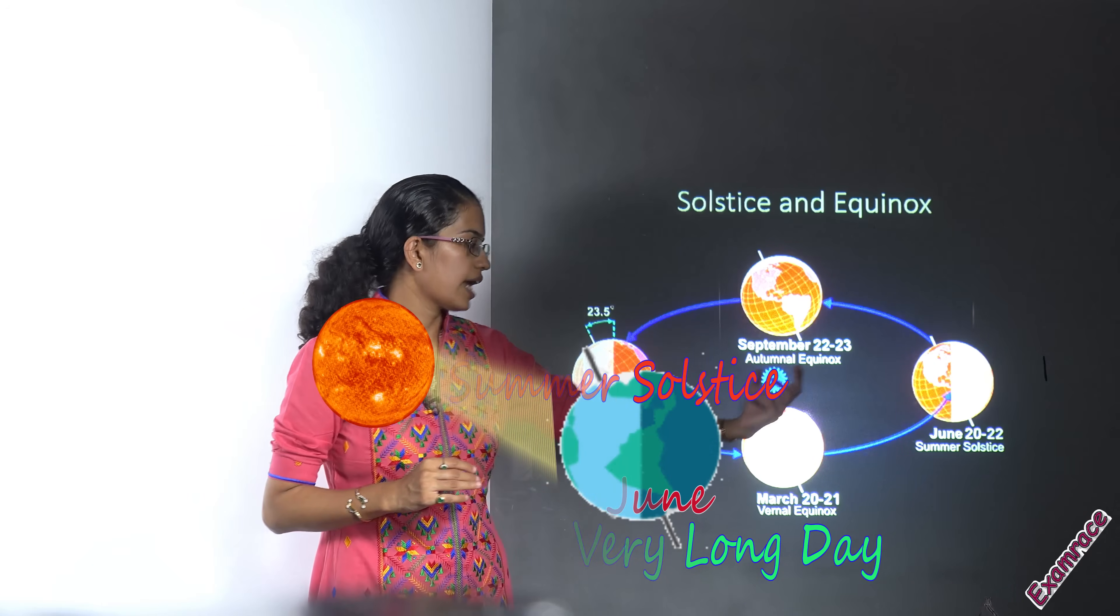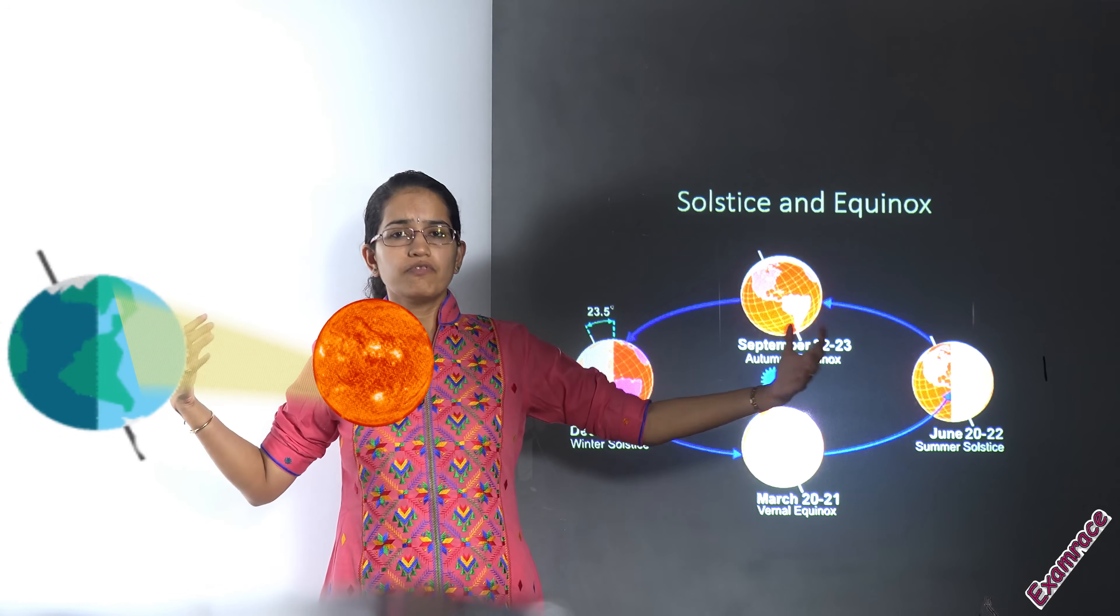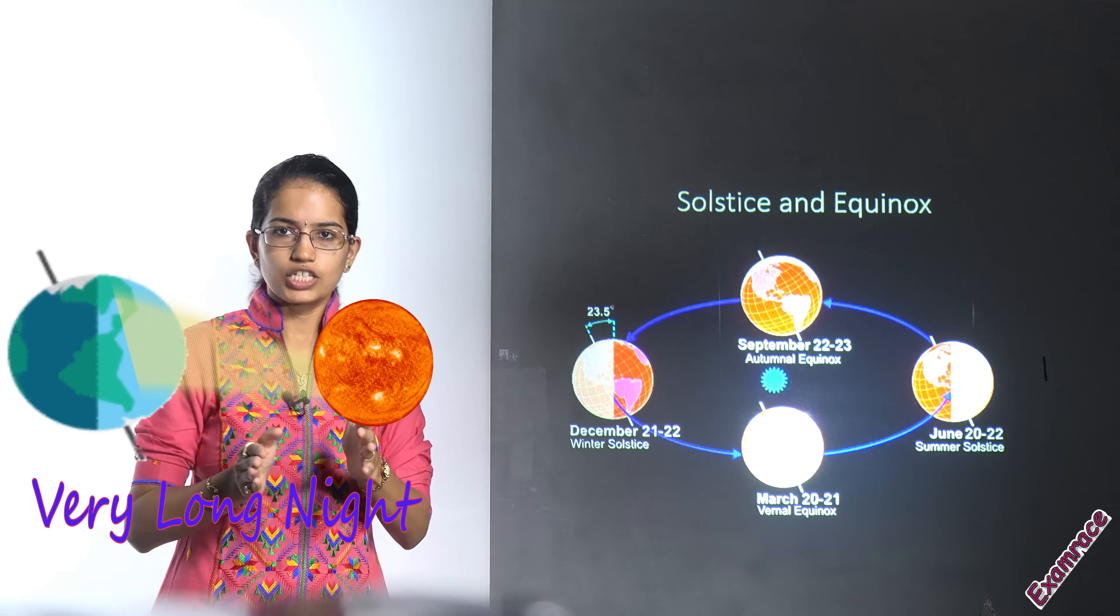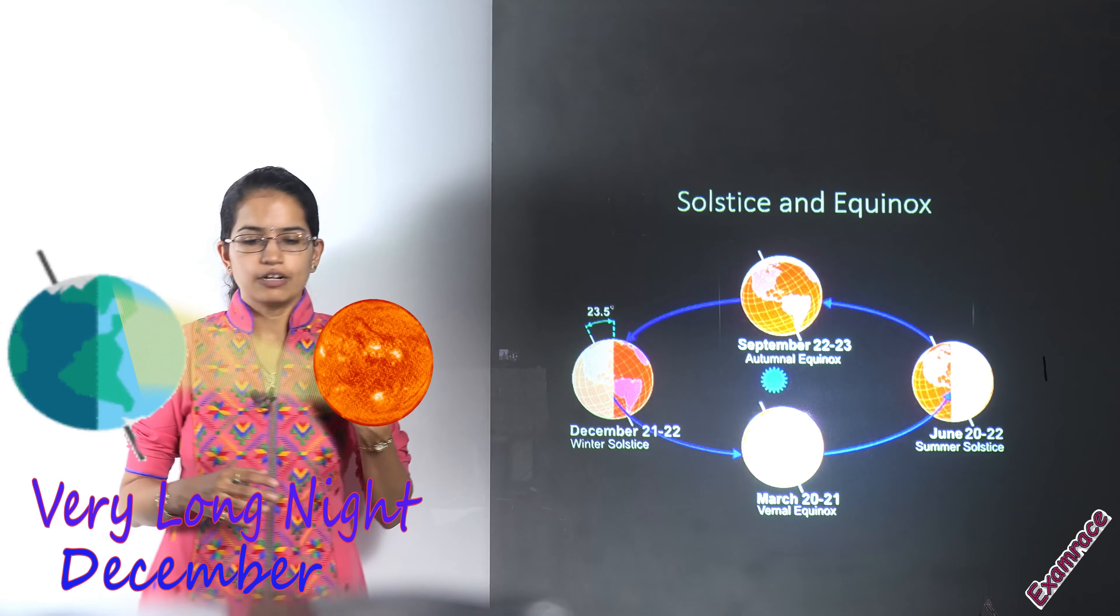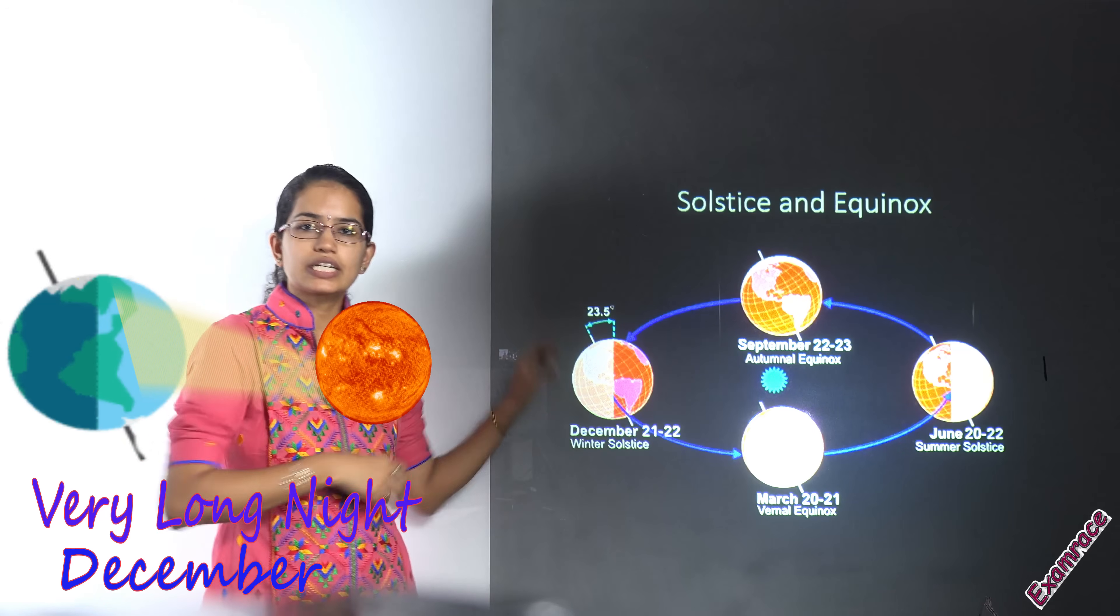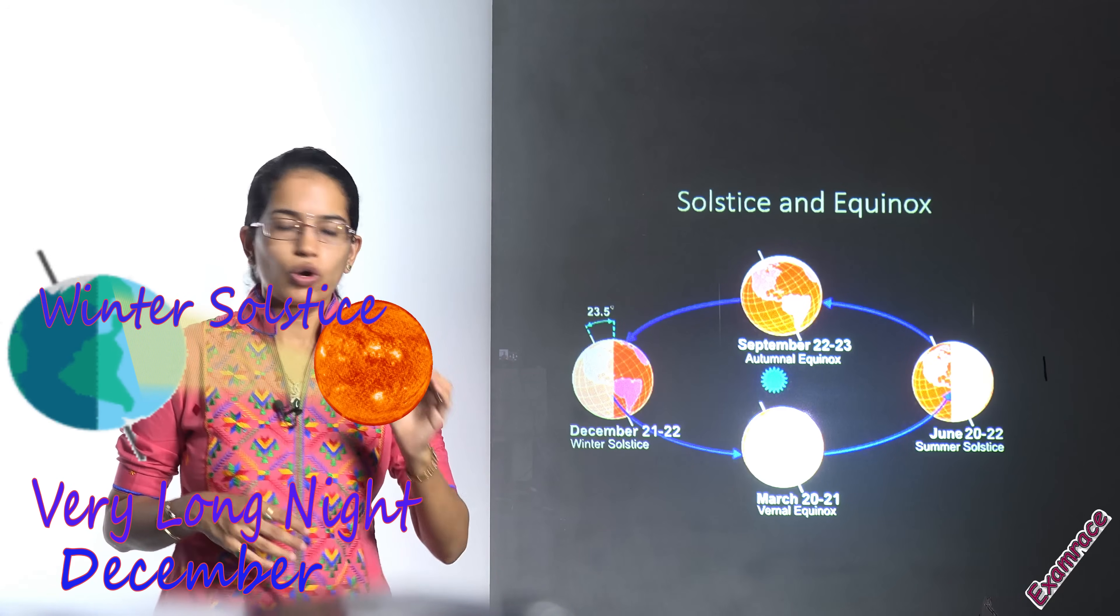However, on the other hand, in the winters what would happen? The nights would become very long and the days would become very short. This happens in the month of December, usually around 22nd December, where we say you have the winter solstice where the days are shortest and nights are longest.